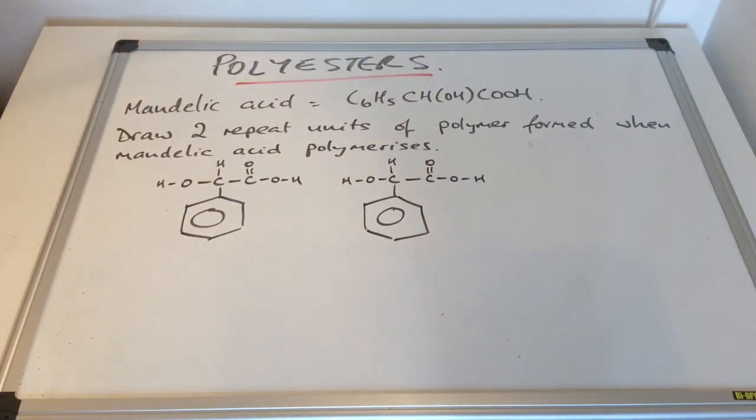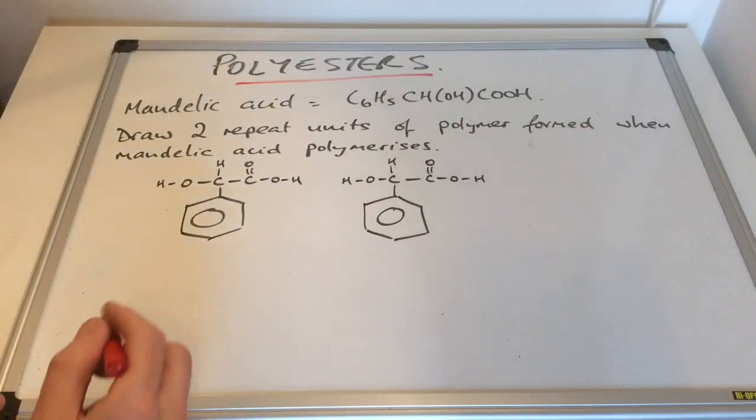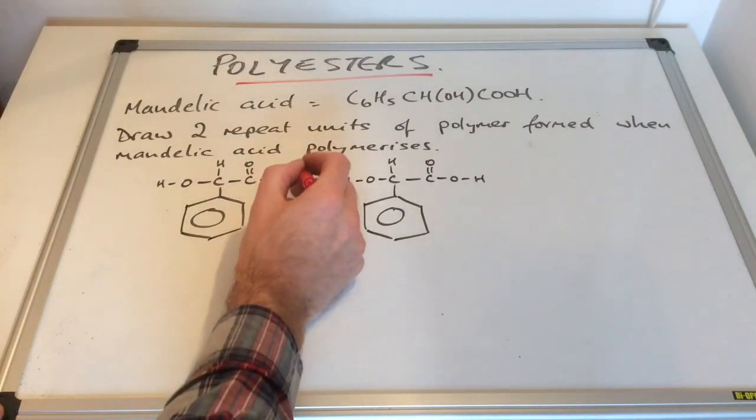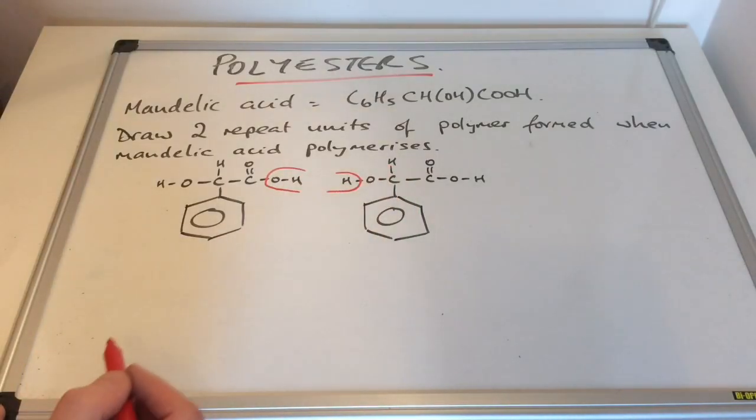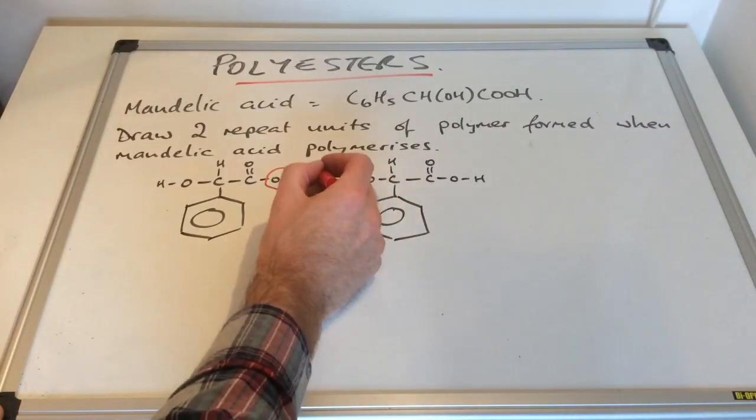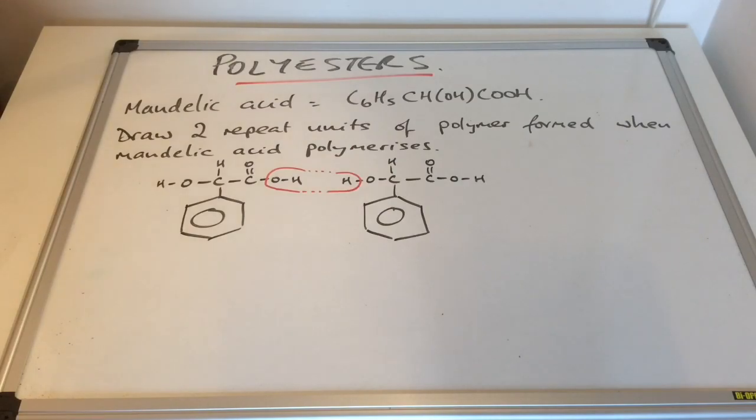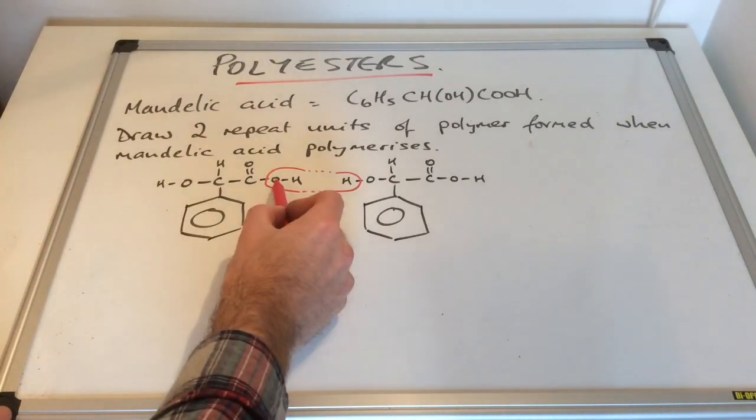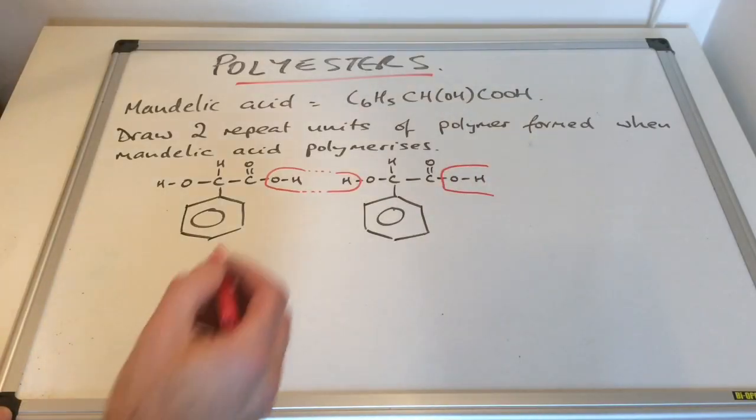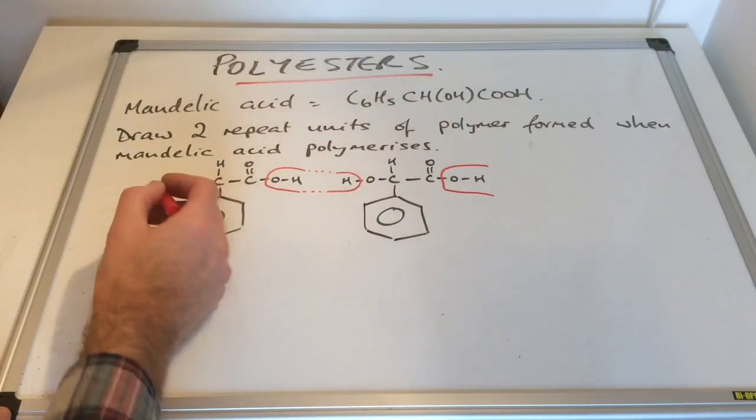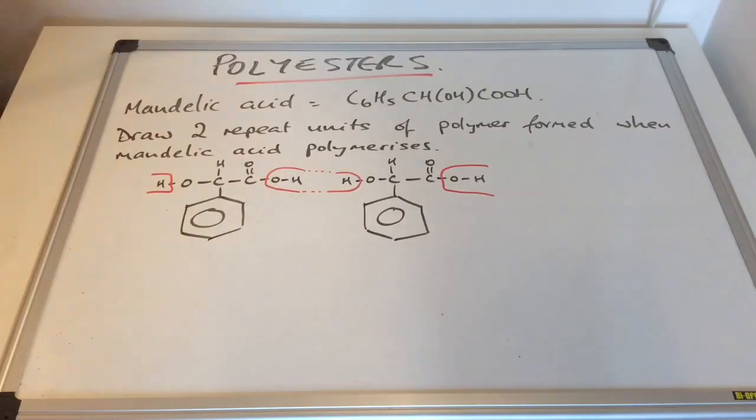So we'll start with drawing up two separate molecules side by side of mandelic acid. I've drawn the displayed formula so we can see very clearly what's going to happen. So we'll need to take the OH group from the carboxylic acid group. And the hydrogen from the alcohol group. So that's going to give us our water molecule. Remember this is condensation polymerization. So because I've taken the OH of this one, we need to take the OH of that one. And because it's the H of the hydroxyl, it's the H of the hydroxyl there.